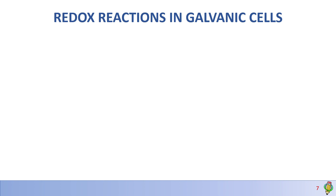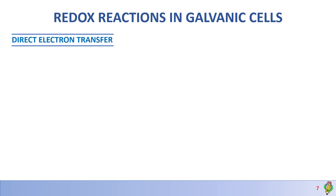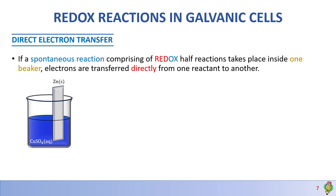Let's talk about redox reactions in galvanic cells. This is part 2 of our electrochemistry playlist. Redox reactions in galvanic cells happen through two methods. The first one is called direct electron transfer — in a spontaneous reaction of redox half reactions taking place in one beaker, electrons are going to be transferred directly from one reactant to another.